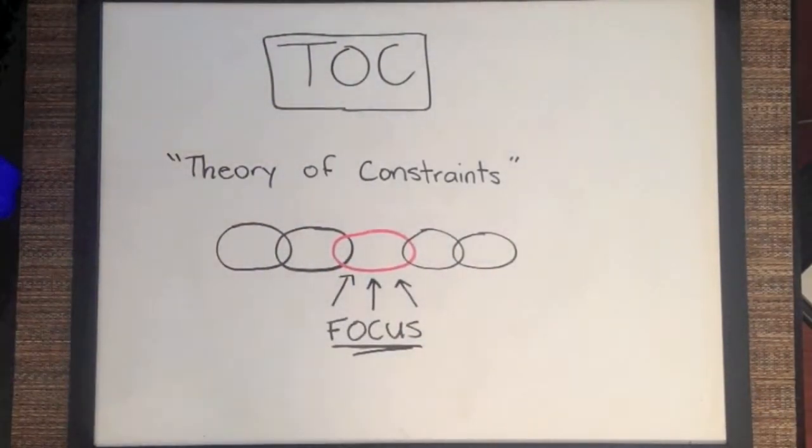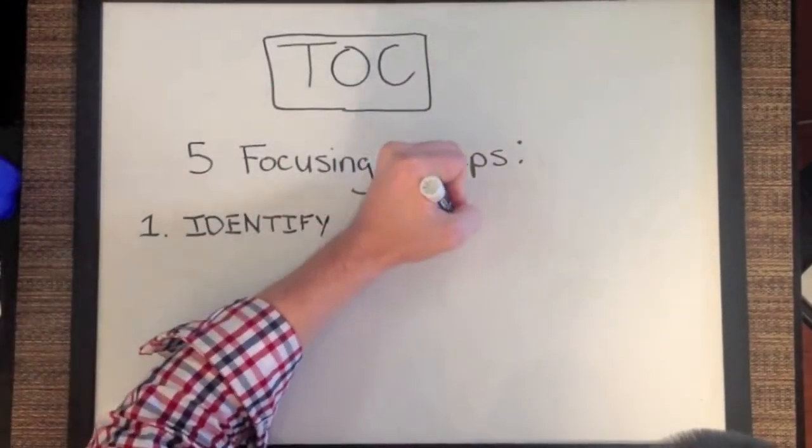Therefore, Theory of Constraints helps organizations identify and focus their continuous improvement efforts on the areas that matter most by using the five focusing steps. Identify the constraint, exploit the constraint, subordinate the constraint, elevate the constraint, and rinse and repeat.